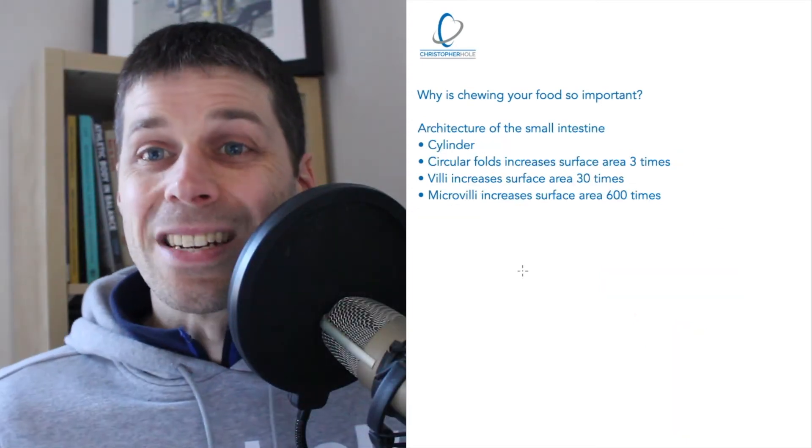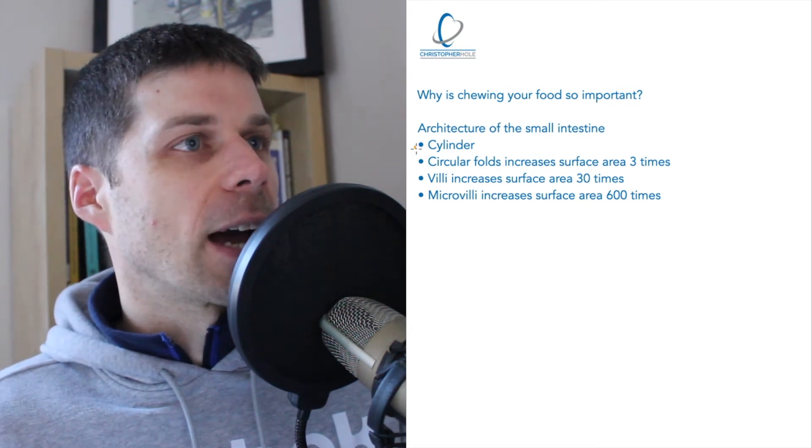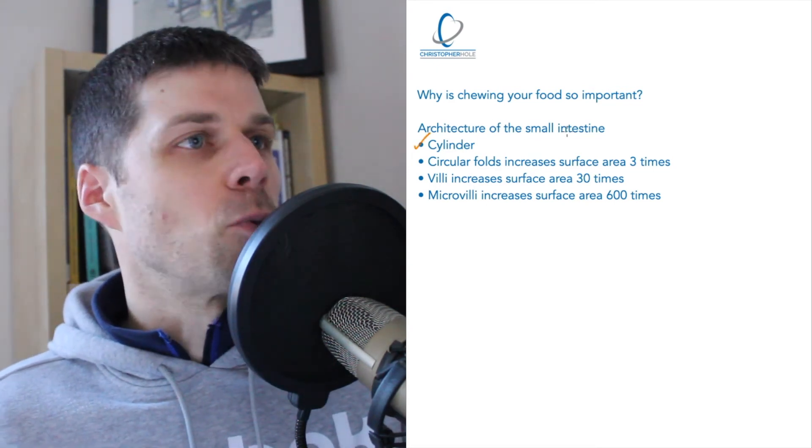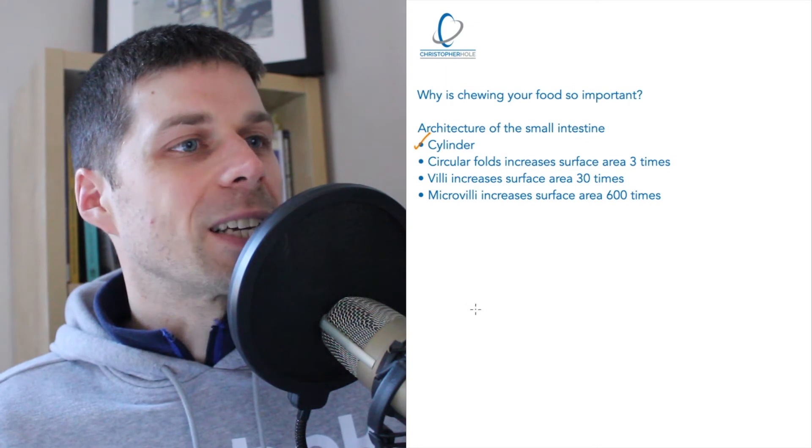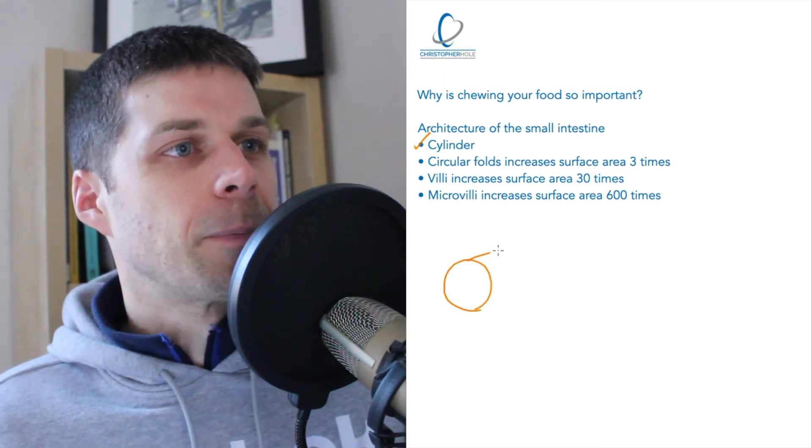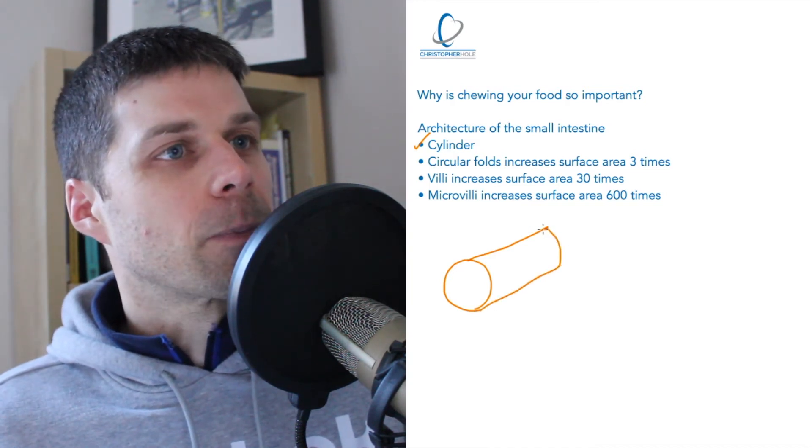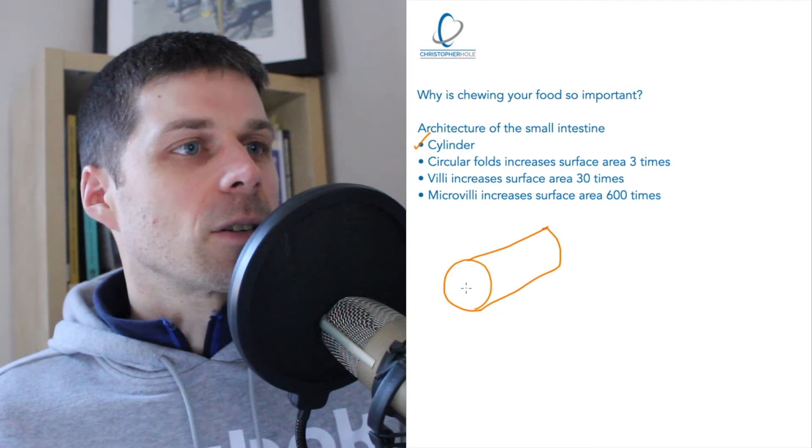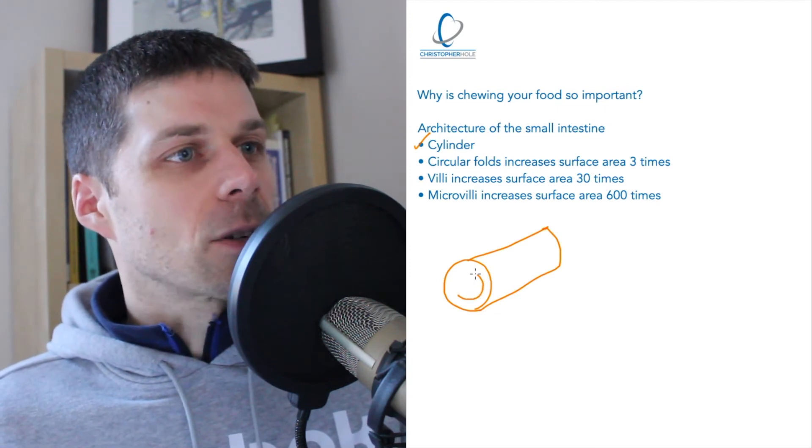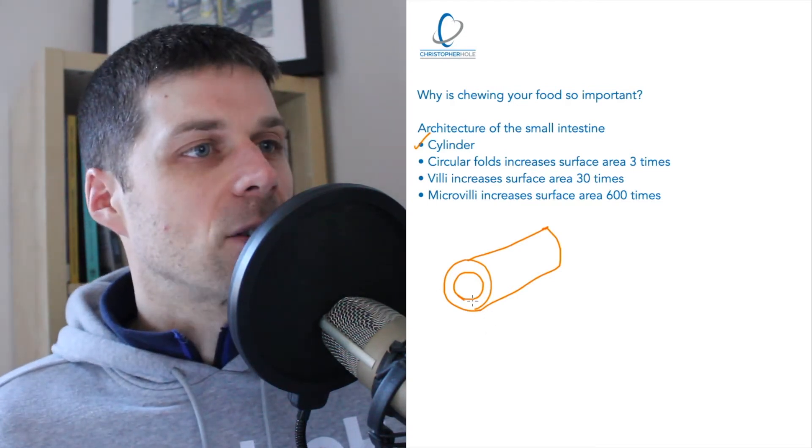We're going to look at the small intestine in a few stages, so these are essentially the stages that we're looking at. So we've got the architecture of the small intestines. Now, what it essentially is, it's a tube or a cylinder, or a pipe, if you want to call it that. So the food enters, and you've obviously got layers, which I've discussed in previous videos. Now these layers...